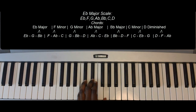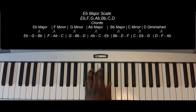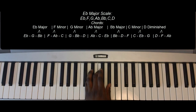C minor — or I'm sorry — C, E-flat, and G. D diminished: D, F, A-flat.